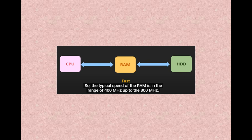But still, the clock speed of the CPU is so high that even compared to RAM's speed, the CPU's speed is comparatively still slow. Normally, the typical speed of RAM ranges from 400 megahertz to up to 800 megahertz. Still, this speed is less than your clock speed.